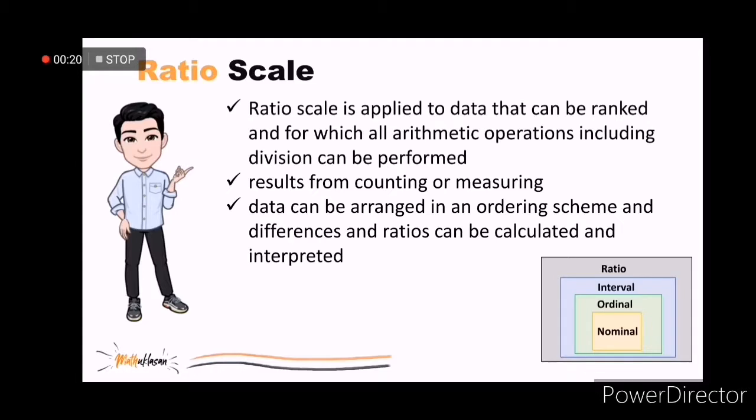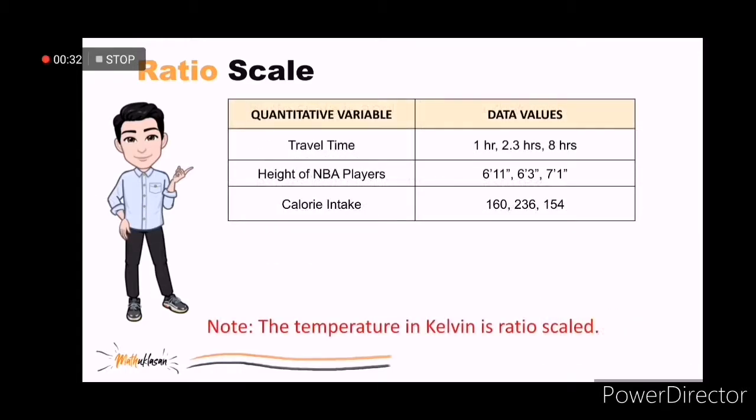A ratio scale is an ordered scale in which the difference between the measurements involves a true zero point as in height, weight, age, or salary measurements. Other examples are travel time and calorie intake.